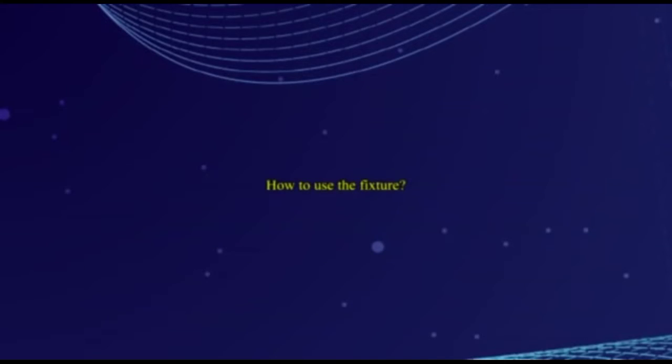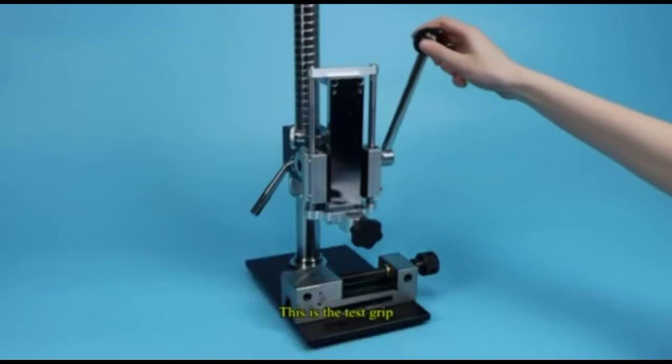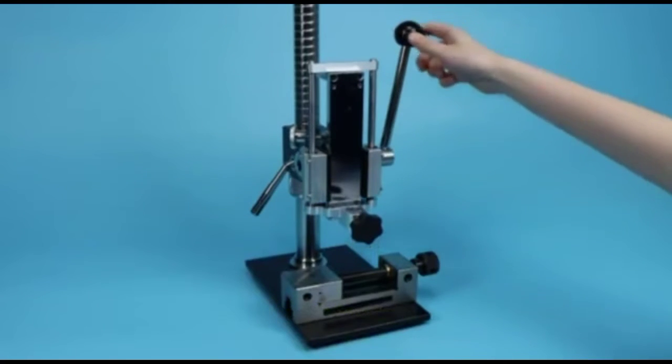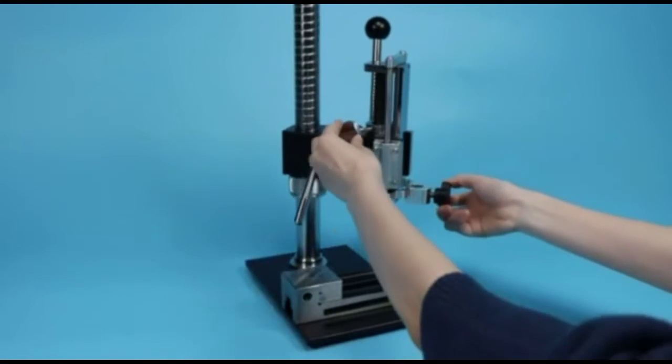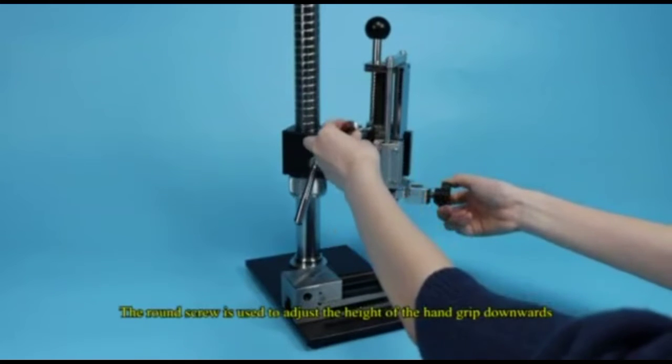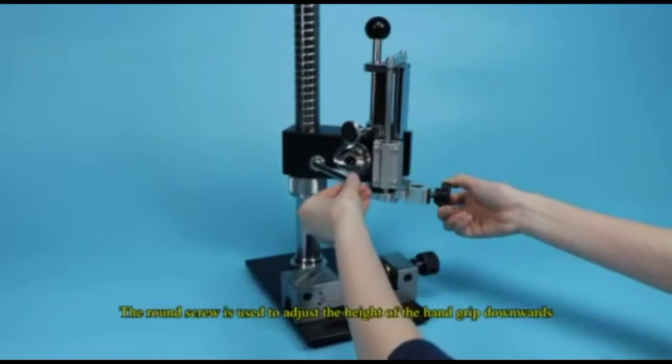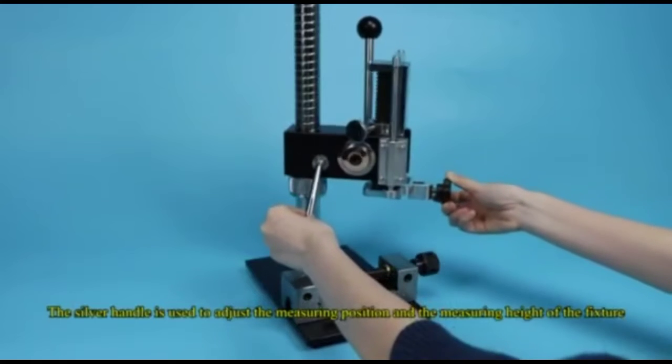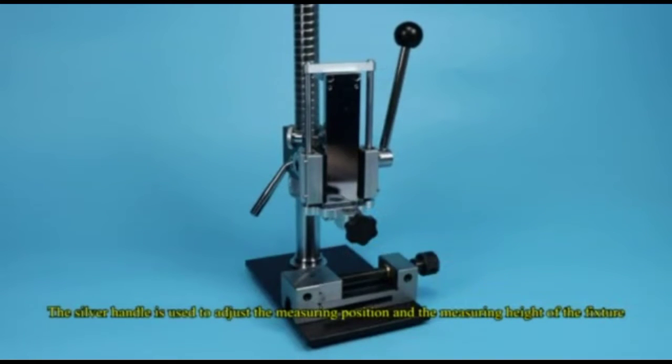How to use the fixture. This is the test grip. The round screw is used to adjust the height of the hand grip downwards. The silver handle is used to adjust the measuring position and the measuring height of the fixture.